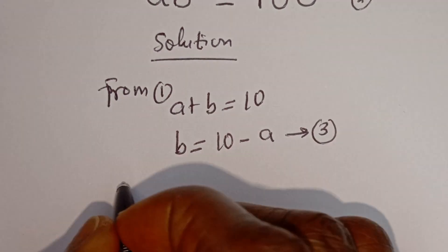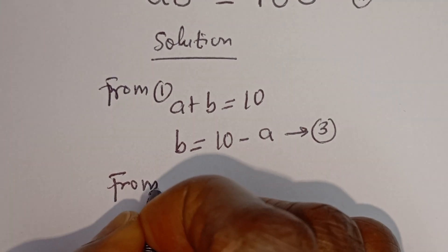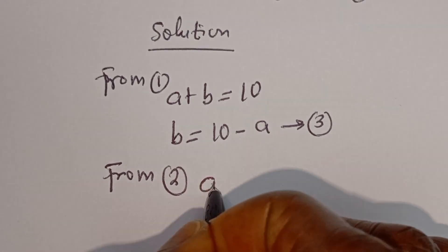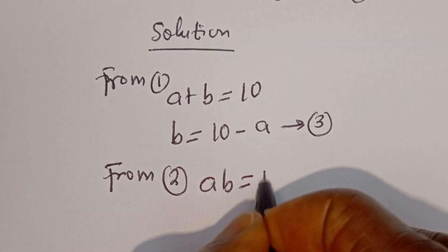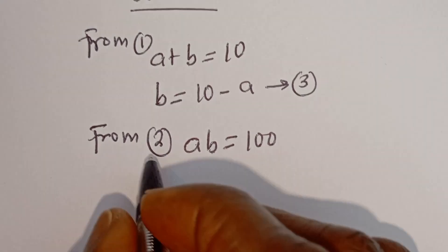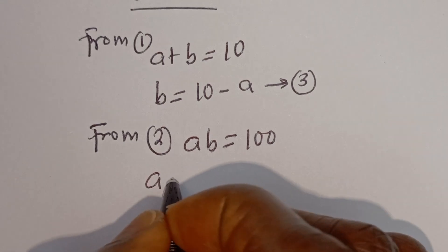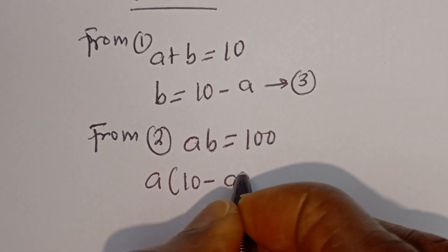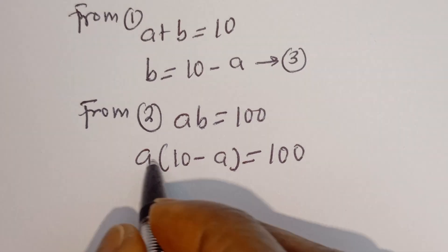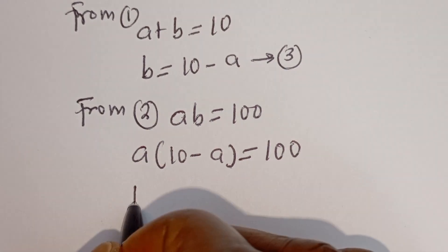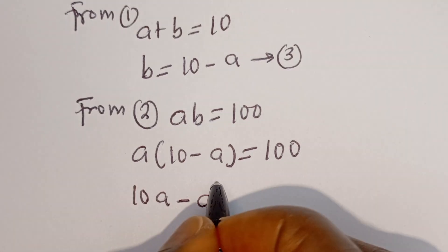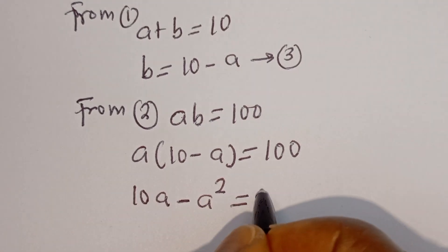Then from equation 2, we want to substitute for b. That is, a times b is equal to 100. Now when b is 10 minus a, we have a times (10 minus a) is equal to 100. Let's open the bracket: a multiplied by 10 is 10a, minus a multiplied by a, which is a squared.